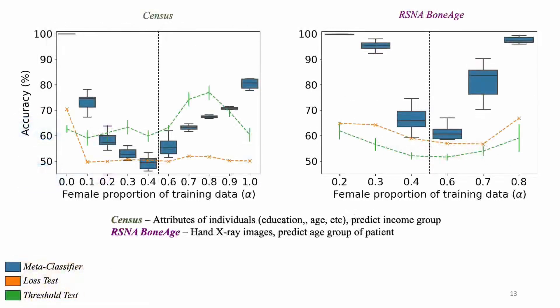Let's look at some of the results. So here we talk about experiments for the Census and Bonus data sets. The first one is essentially looking at different attributes for people and trying to predict their income group, and the second one looks at hand x-ray images and predicts the age group of a patient. And in these experimental settings we set the first distribution such that the probability of female in these experiments is 0.5, so it's equally likely to be a female or not. And then for the second distribution, the same probability is set to alpha, and the alpha value is what we vary on the x-axis here.